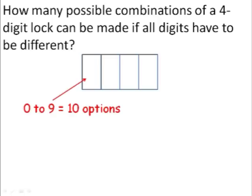So here, the first place we have 10 options. But for the second place, we don't have 10 options. We have one less option. So there are 9 options for the second place because one number, one digit has already been placed in the first slot.